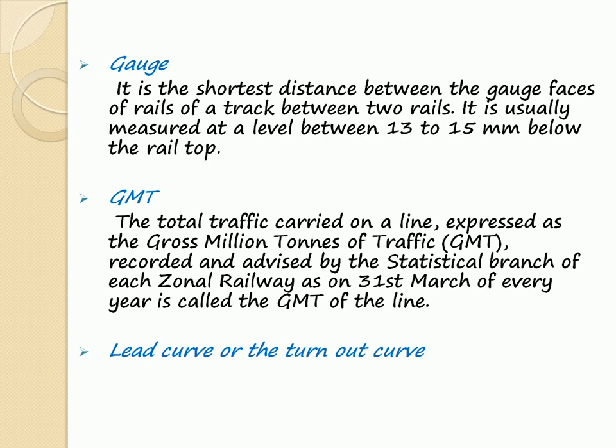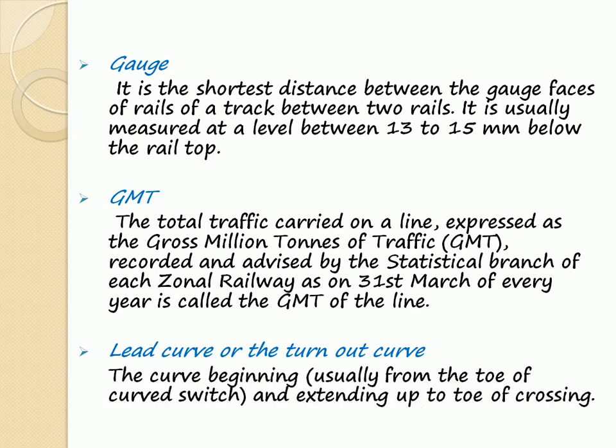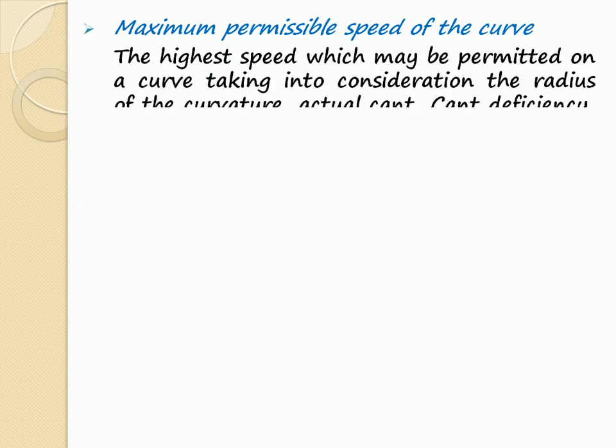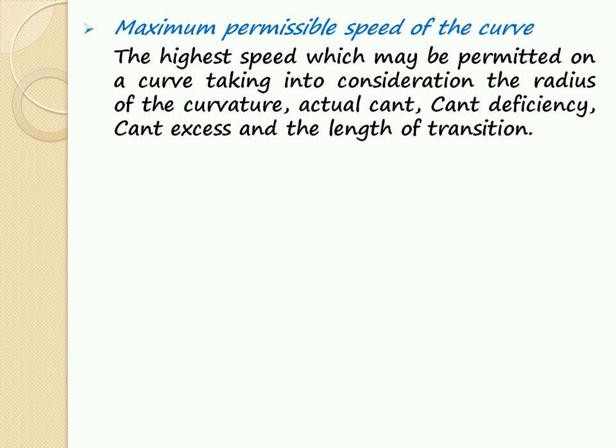Lead Curve or Turnout Curve: The curve beginning from the toe of the switch and extending up to the toe of crossing. Maximum Permissible Speed of the Curve: The highest speed which may be permitted on a curve, taking into consideration the radius of curvature, actual cant, cant deficiency, cant excess, and the length of transition.